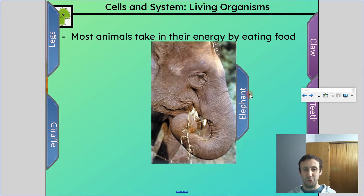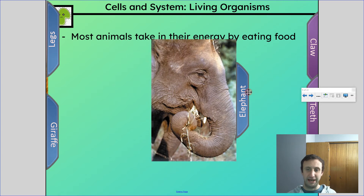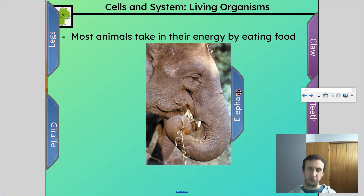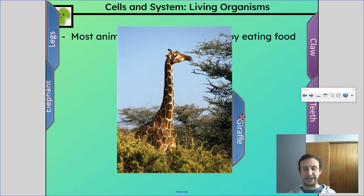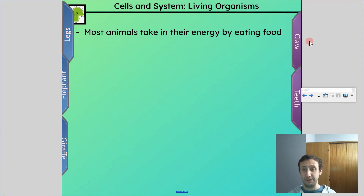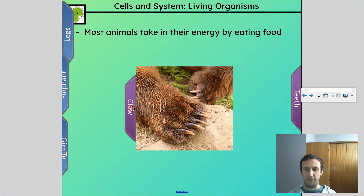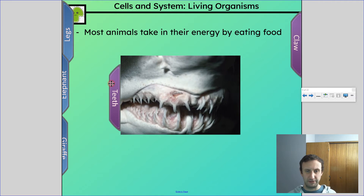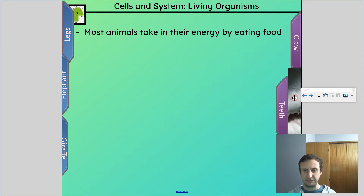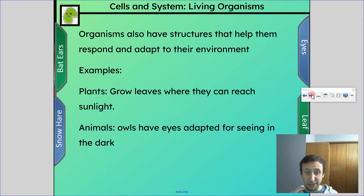Elephants have their amazing trunk, which allows them to eat — those trunks are incredibly dexterous. Giraffes have their amazing long neck and their super tough, crazy tongue. Animals also have claws to catch and tear apart prey, and of course teeth — those are some scary teeth, like a shark. Those are examples of structures that animals have to enable them to get energy.